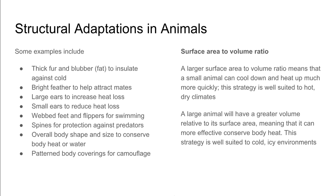Some organisms have a larger surface area to volume ratio, meaning they can cool down and heat up very quickly. This is usually found in organisms that live in hot and dry climates, so smaller organisms are more likely to survive there. However, some large animals have a greater volume relative to their surface area, which means they can conserve body heat — well suited to organisms living in cold and icy environments.